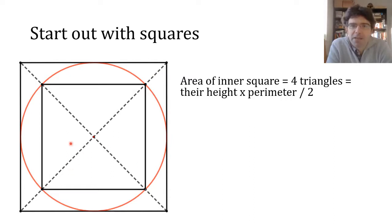These triangles, the four bits, they all have the same height, the distance from the centre of the circle to each side, so their total area is half of that height times the sum of the bases. In other words, times the perimeter of each square.